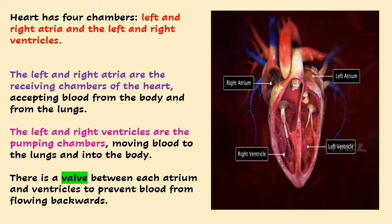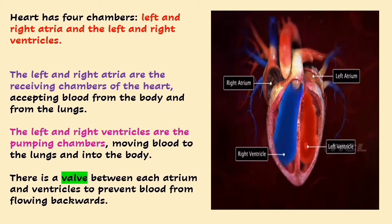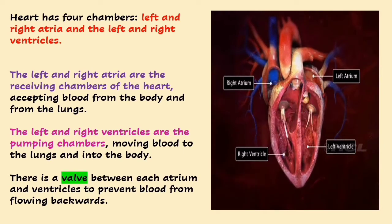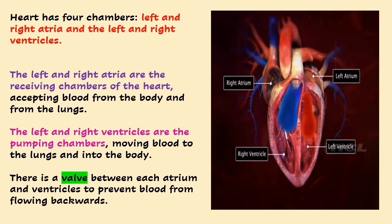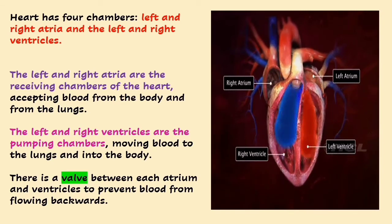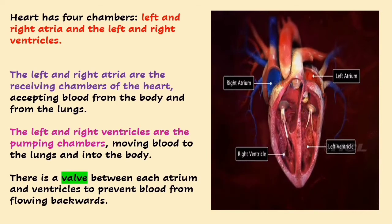The two atria, which are the right atrium and the left atrium, are the receiving chambers of the heart. They accept blood from the lungs. The two ventricles — the left ventricle and the right ventricle — are the pumping chambers of the heart. They move blood from the heart to the lungs and into the body. There is a valve between each atrium and ventricle to prevent blood from flowing backwards. The valves are like one-way doors that keep blood moving in only one direction.